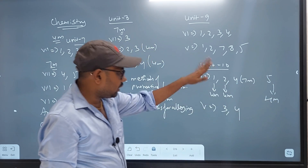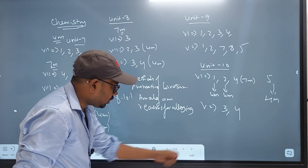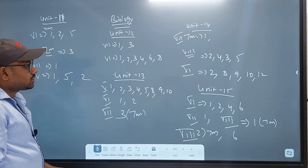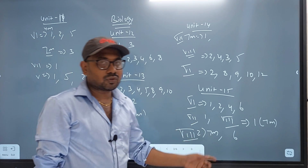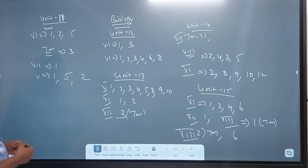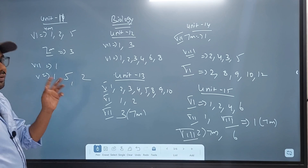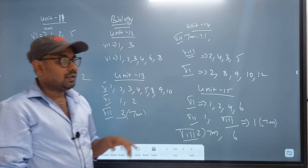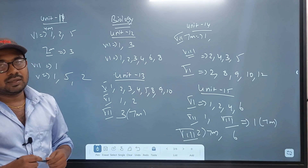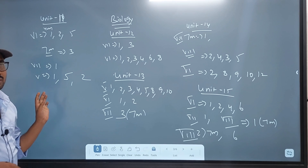Unit 9, Unit 10: questions 1, 2, 4. The 4th is 7 mark, the 5th is 4 mark, questions 3 and 4. This is Unit 10. If you look at the chemistry question, we will ask the important question. Unit 11: 7 mark question 3, 7 mark questions 5, 1. 2 mark, 4 mark, 7 mark questions 1 and 5. 2 mark, 4 mark, 7 mark, 8 mark, 10 mark.